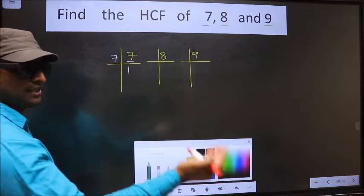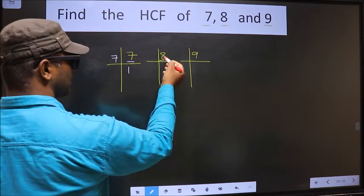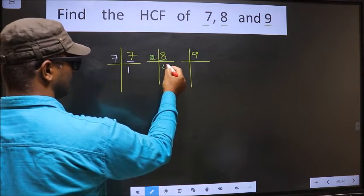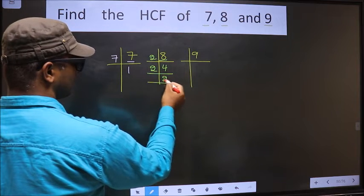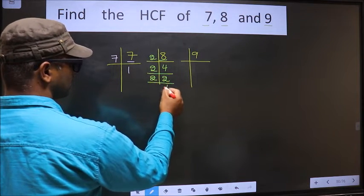Now the other number is 8. 8 is 2 times 4. 4 is 2 times 2. Now we have 2. 2 is a prime number, so we stop here.